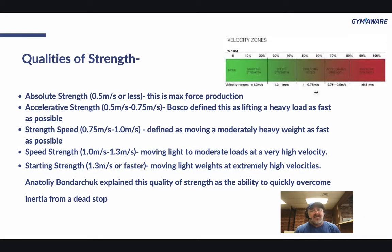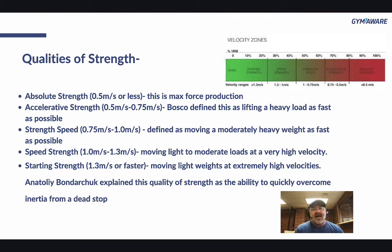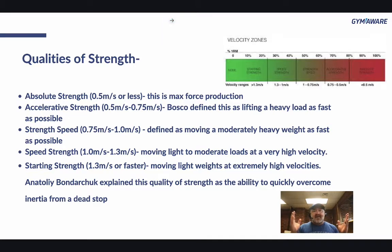Qualities of strength. Bosco was the first to really dial in what each velocity zone meant to what you're actually doing — like what qualities you were working. Brian Mann, in the last few years, has done a great job getting more specific with those zones. First, absolute strength — we all know what that means. That's maxing out, going heavy, max force production. That's going to be at 0.5 meters per second or slower.